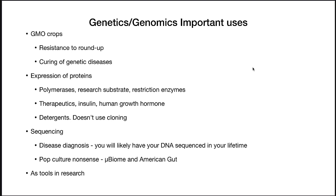We've talked a lot about genetics and genomics, and these technologies have been used to generate all sorts of useful products in modern society. One we talked about before is GMO crops — genetically modified crops that give resistance to Roundup. It's also been used in the curing of certain genetic diseases. You can express all sorts of proteins using these systems: polymerases, research substrates, restriction enzymes. There are therapeutics such as insulin and human growth hormone. In detergents, enzymes like alkaline phosphatases and proteases are isolated this way to make detergents work better.